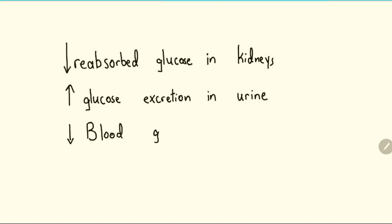So, to summarize, SGLT2 inhibitors act to decrease glucose reabsorption in the kidneys, resulting in increased excretion of glucose in the urine. And this ultimately leads to a reduction in blood glucose.